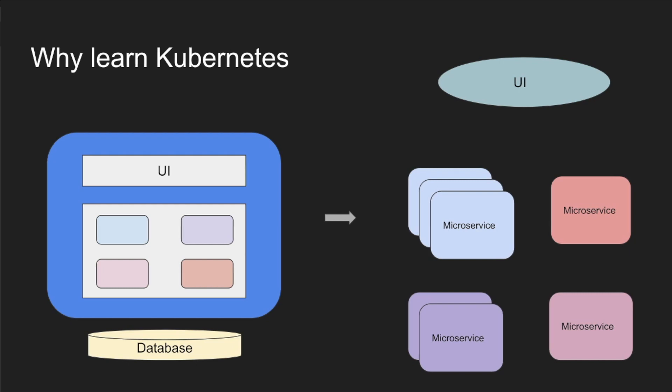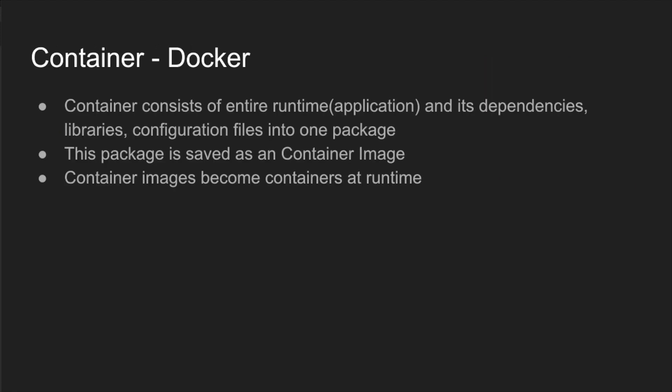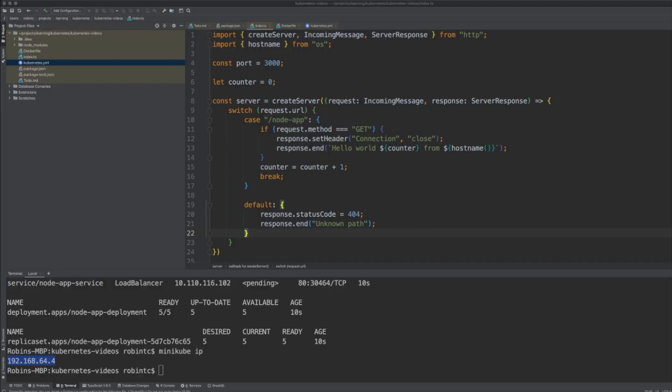With Kubernetes and a few other technologies, using microservices has become very easy — it is now one of the default patterns we use today. The way to package applications into microservices is using container technology, and Docker is one of the most famous container technologies. A container consists of the entire application runtime — our plain Node server — its dependencies — Node modules — and configuration files, all in one package. This package is saved as a container image, pushed like code, and becomes a running container at runtime.